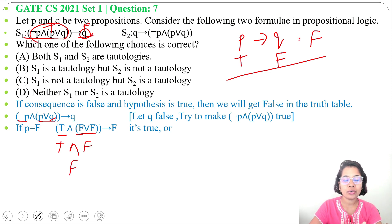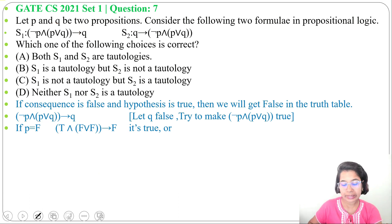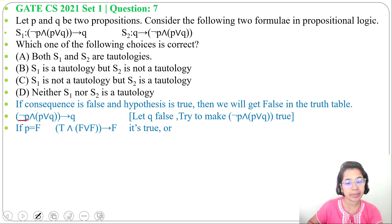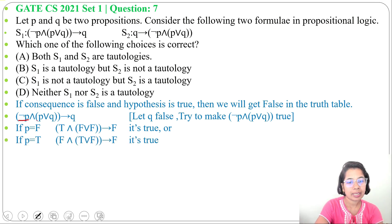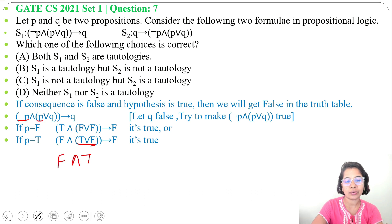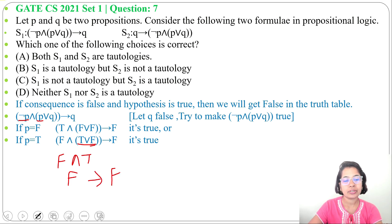In case of conjunction, true and true is true; rest is false. So true and false gives false. Now false implies false — that's true. Next, check when P is true. When P is true, negation P is false. P or Q is true or false, which is true. Then false and true is false. False implies false is true.